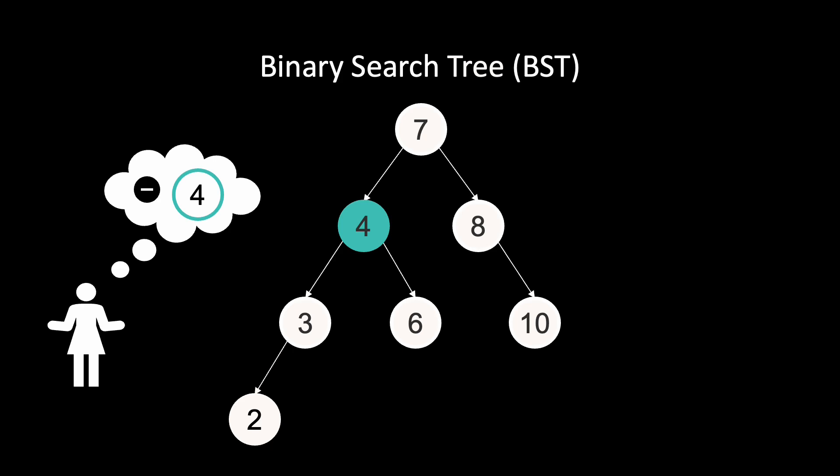Essentially, we search for the smallest larger key. We can find this key by first going to the right child, where all the larger keys are, then always going left to find the smallest larger key. In this case, the right child of key 4 is directly a leaf node without children, so we can simply replace key 4 with key 6.